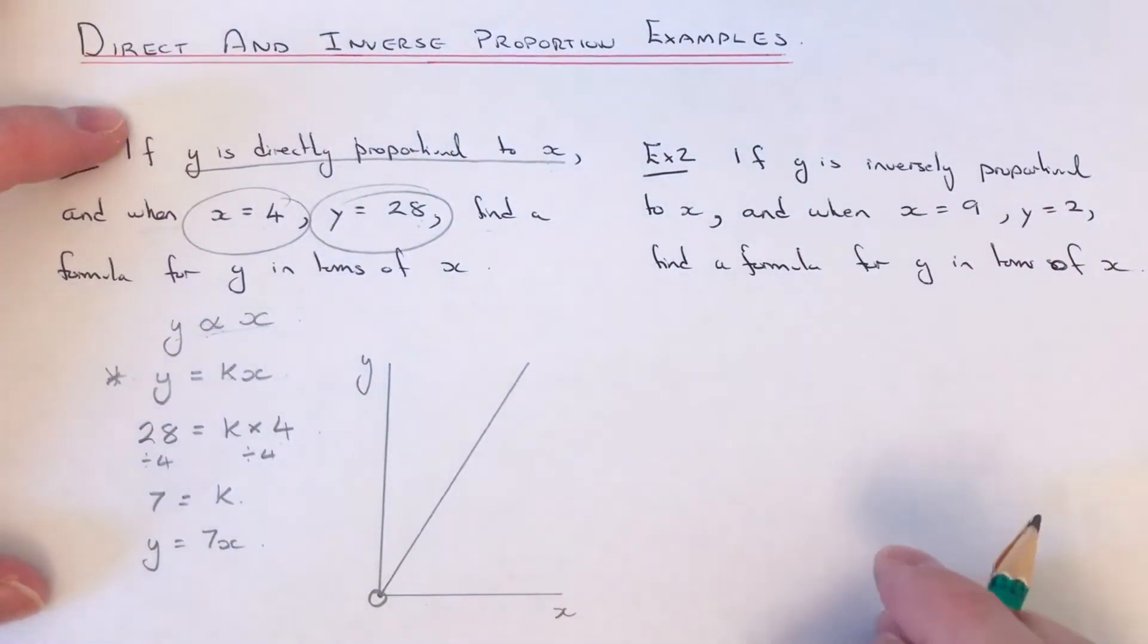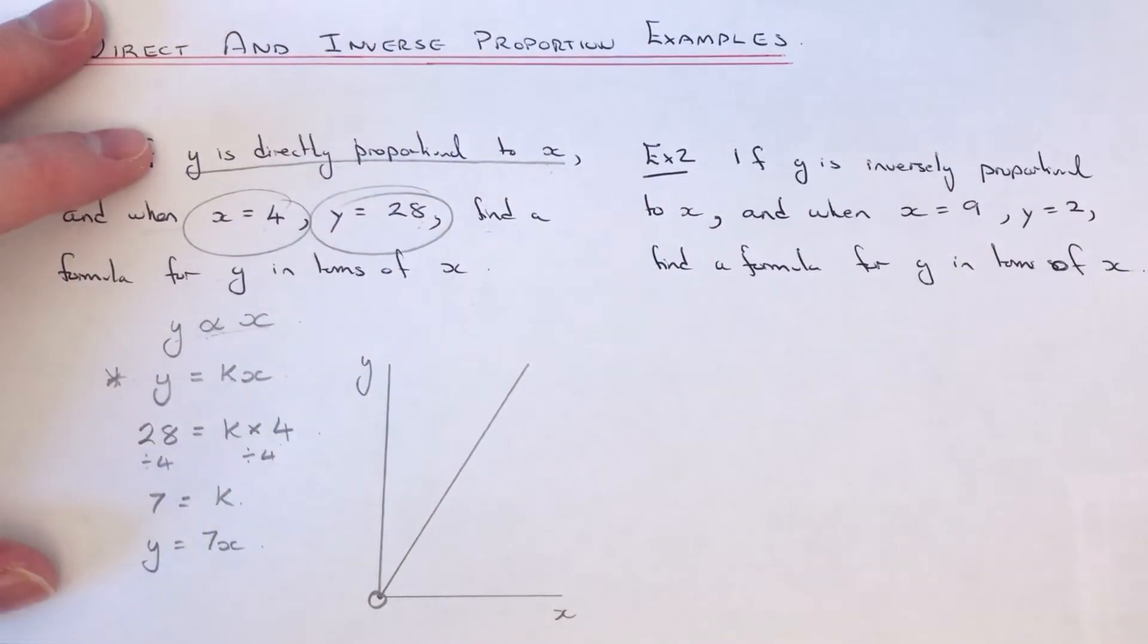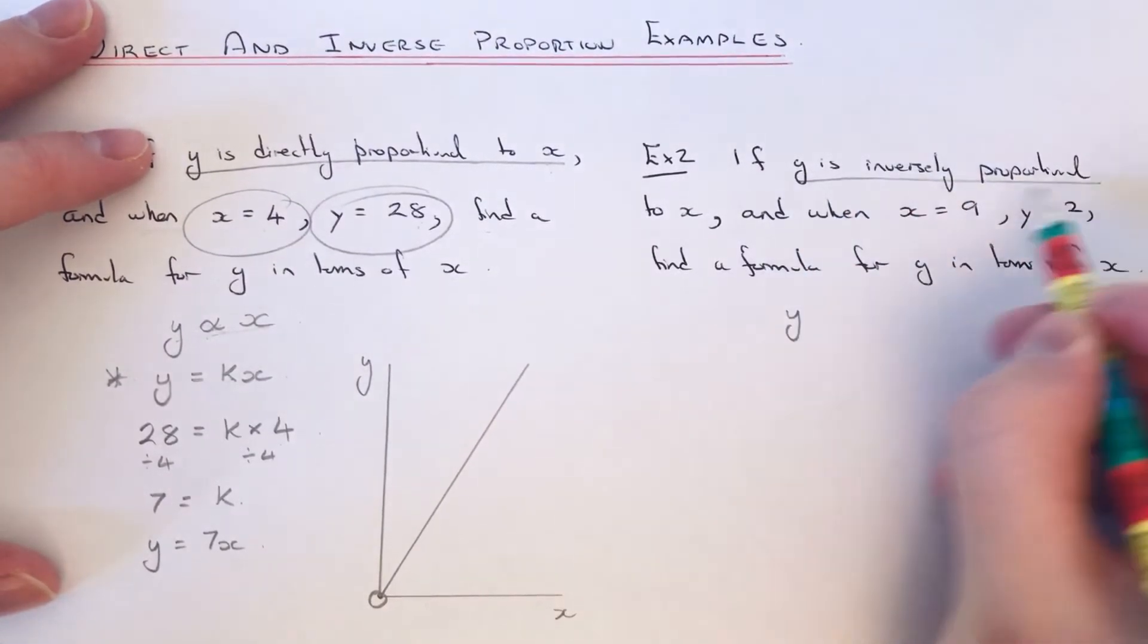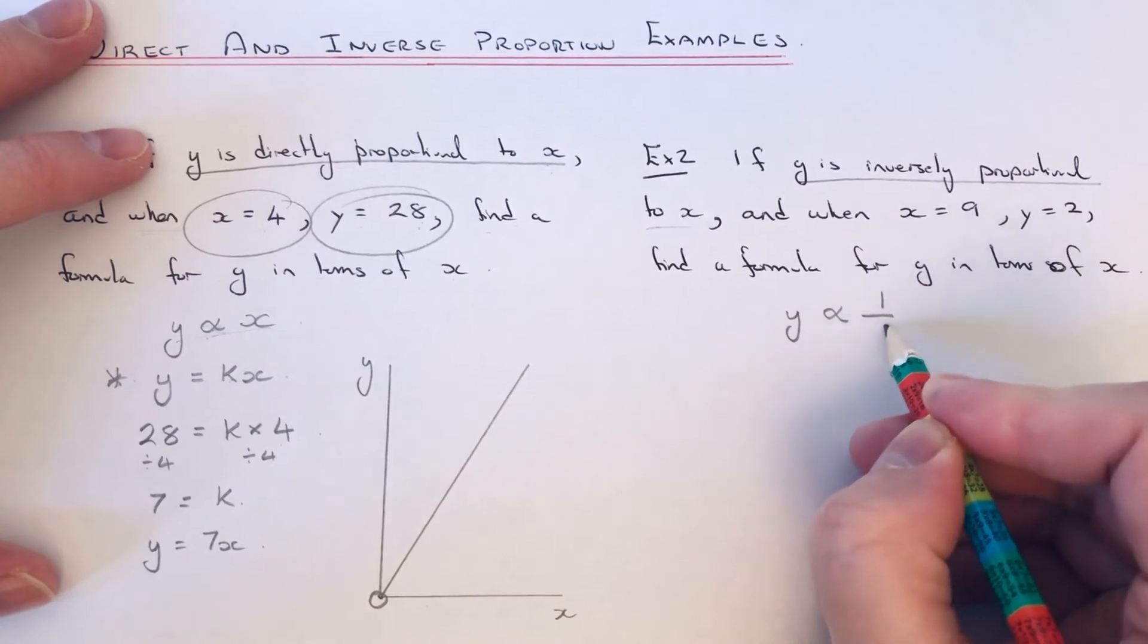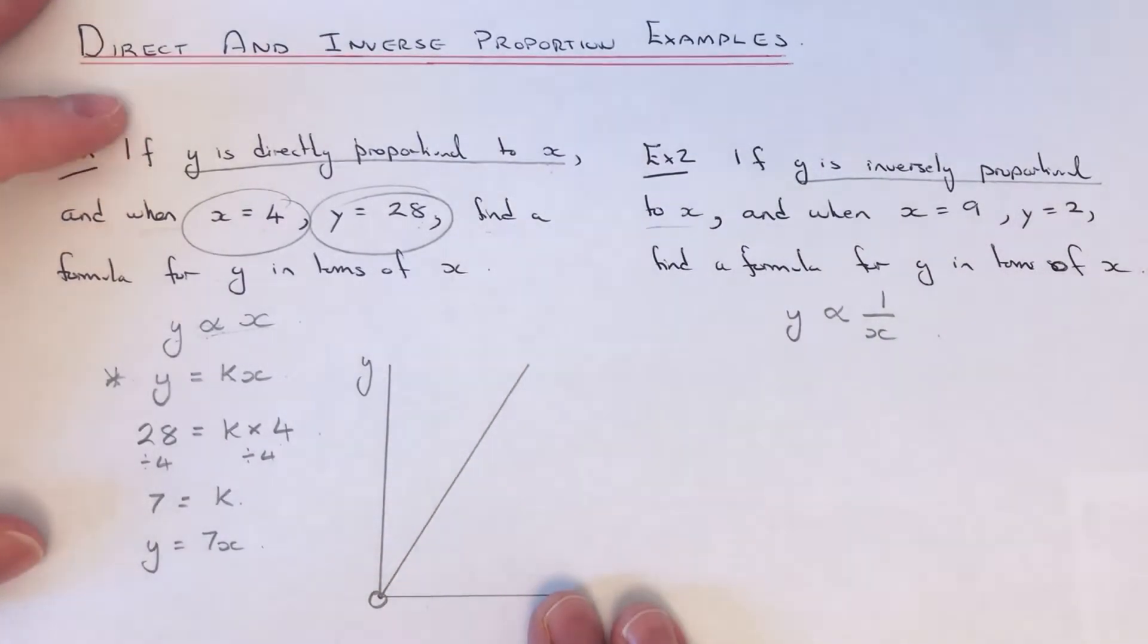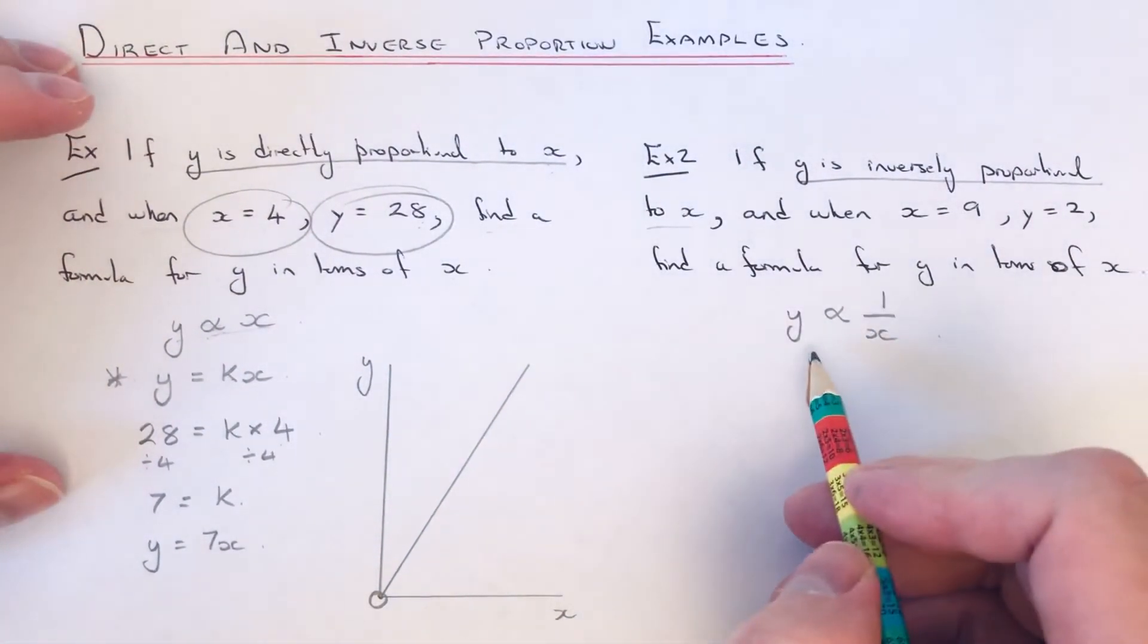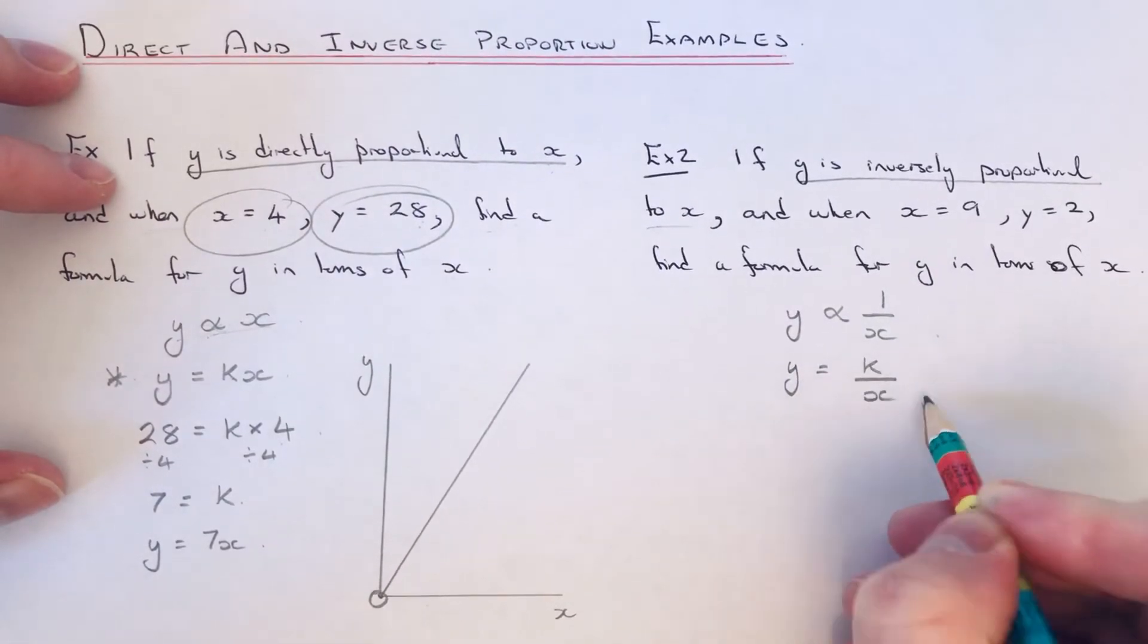So let's have a look at example 2. Y is inversely proportional to x this time. And when x equals 9, y equals 2, find a formula for y in terms of x. So this time we can write that first sentence down as y fish 1 over x. We do it like this because it means as x increases, y is getting smaller. So we now turn this into a formula. So y equals k divided by x.